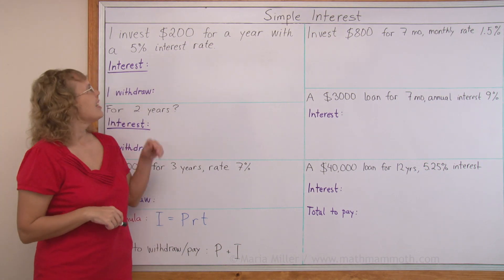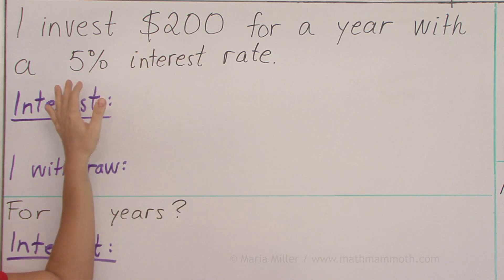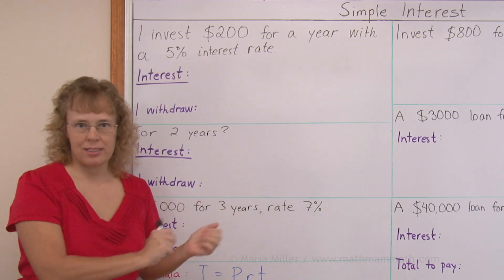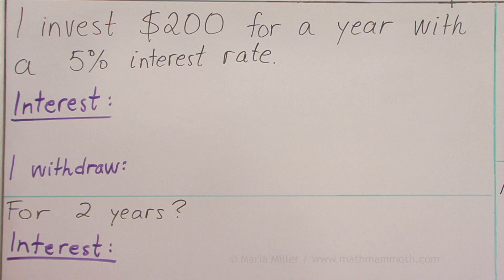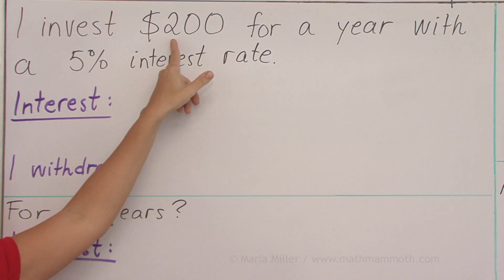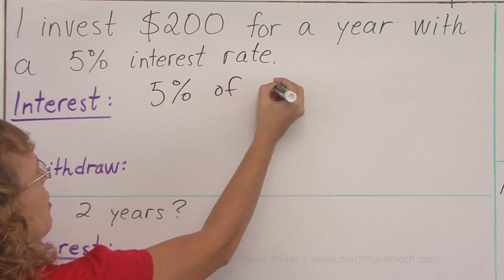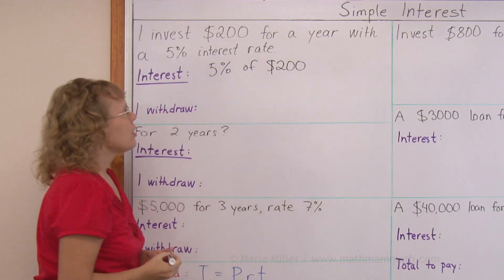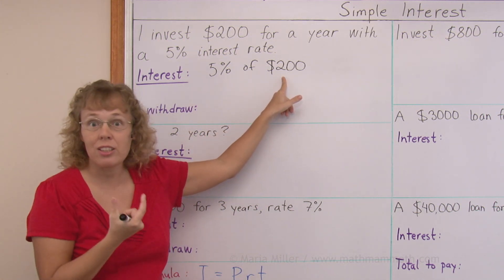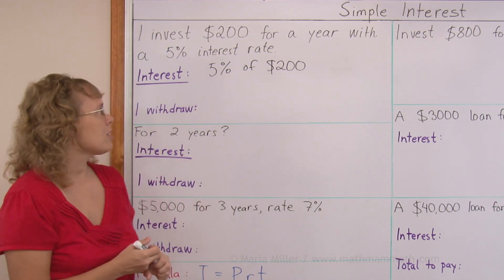Now let's look at some examples. Let's say that I invest $200 for a year with a 5% interest rate. Investing means that I put it into the bank. To calculate the interest, I simply calculate 5% of the $200 — 5% of the principal. I can use mental math here very easily, because 10% of 200 would be $20, and 5% is just half of that, so it is $10.